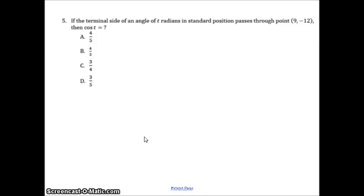This is pre-calculus final exam review 1b, problem 5. The terminal side of an angle of t radians in standard position passes through point (9, -12). What's the value of the cosine of t?